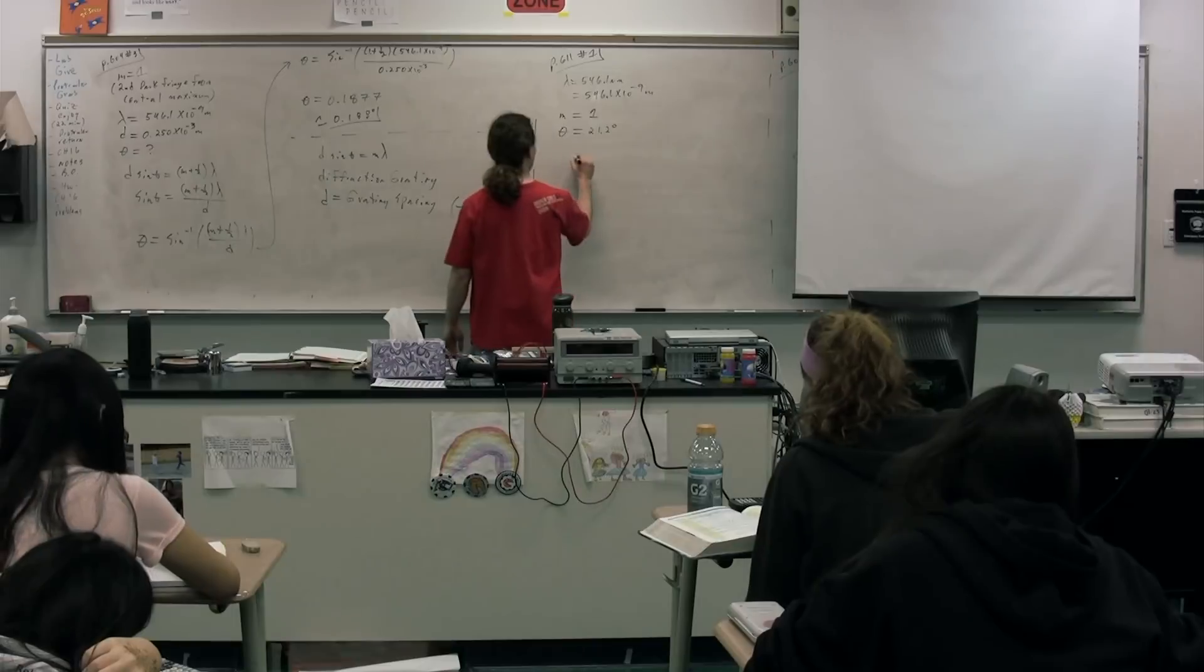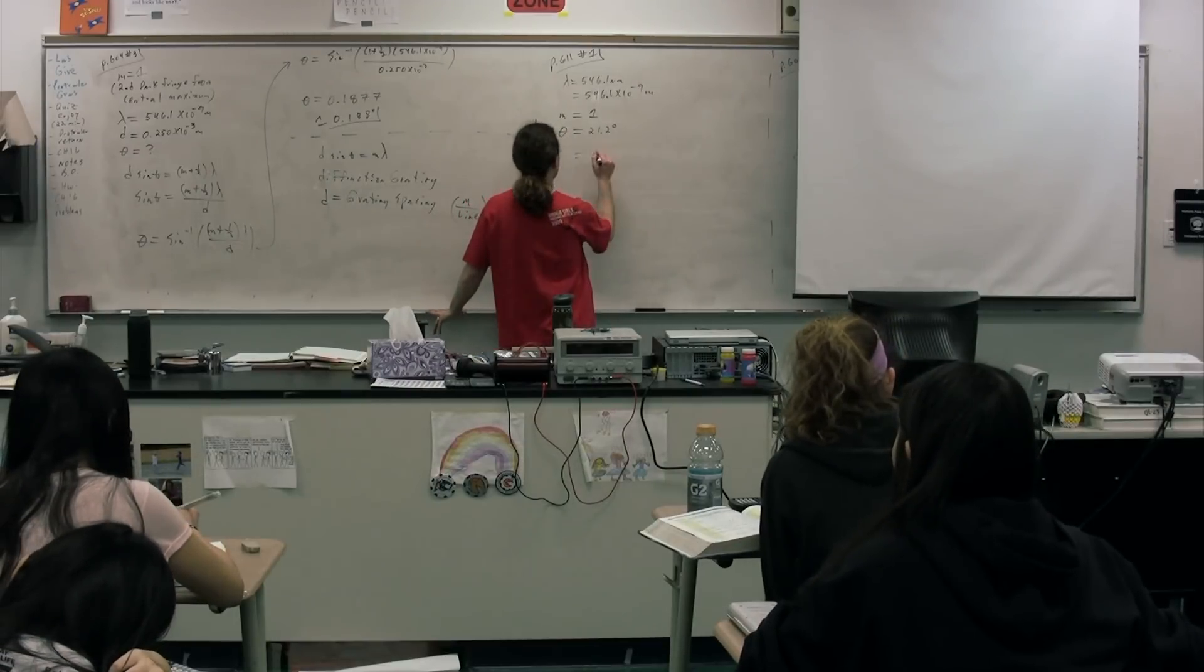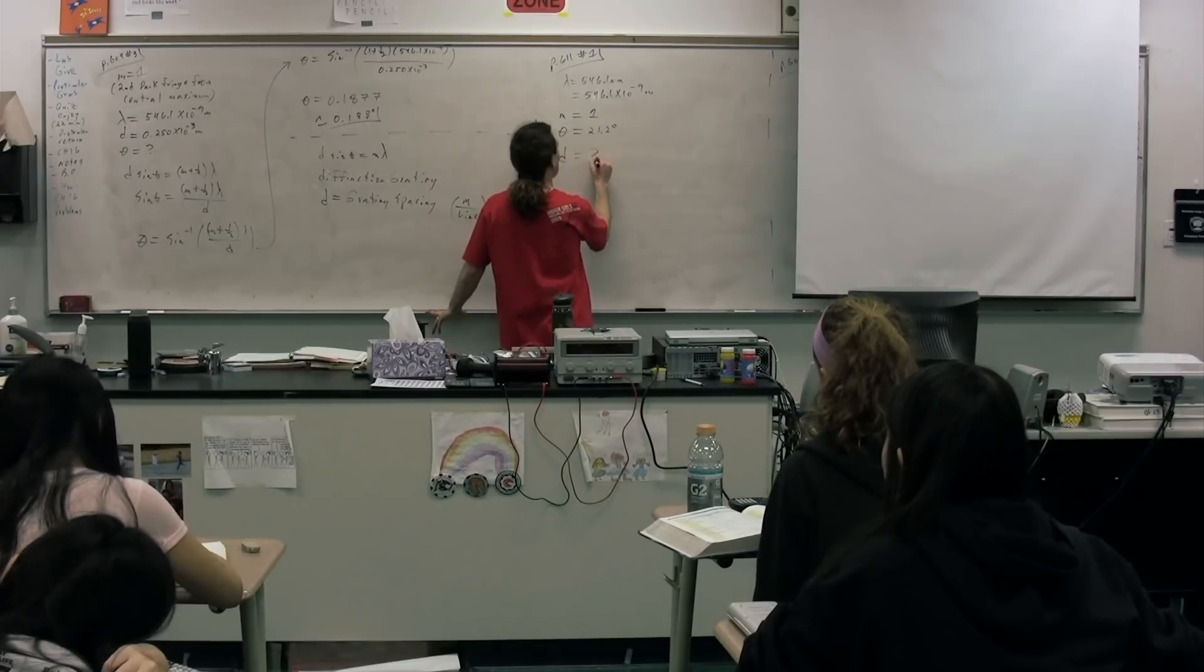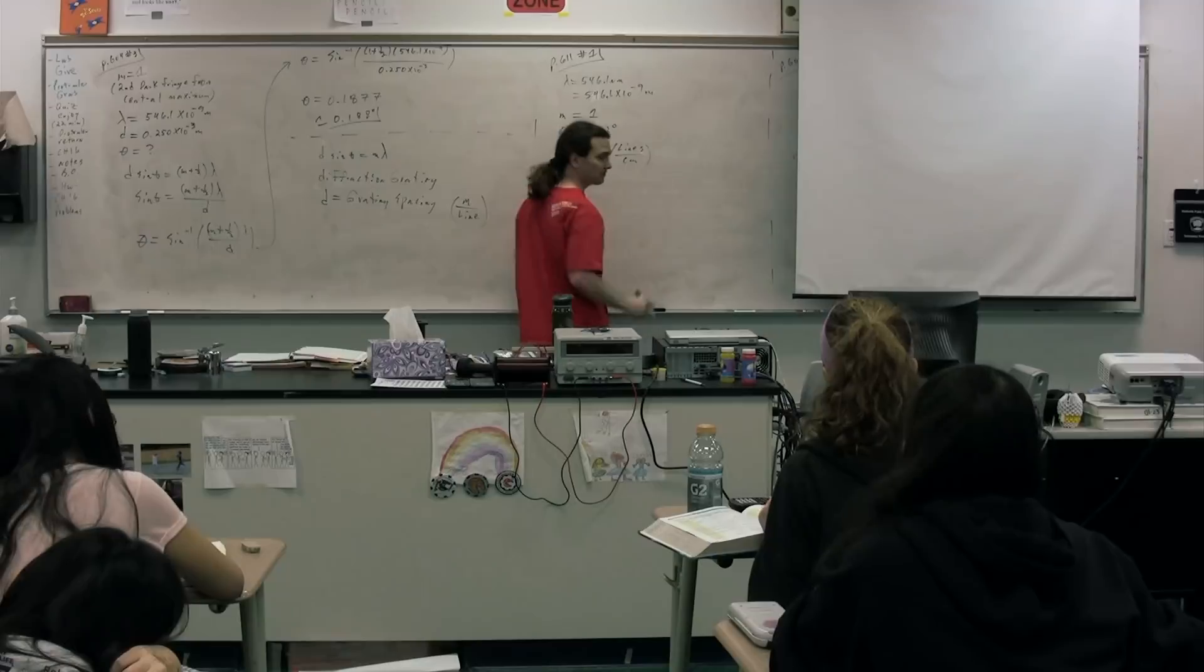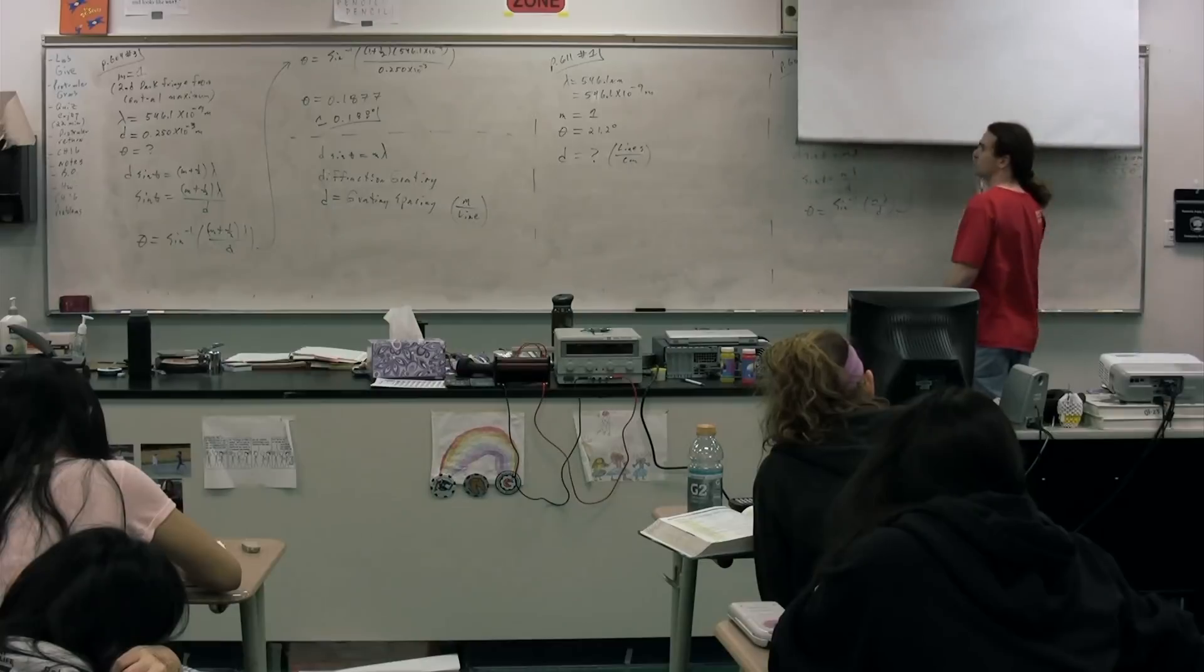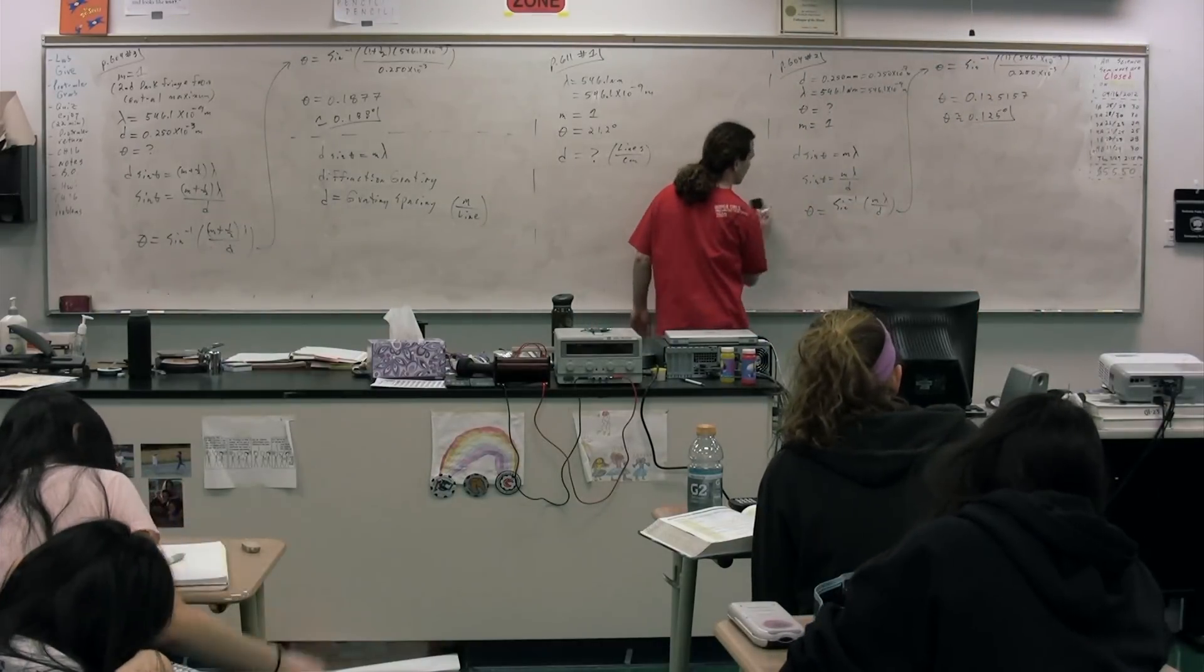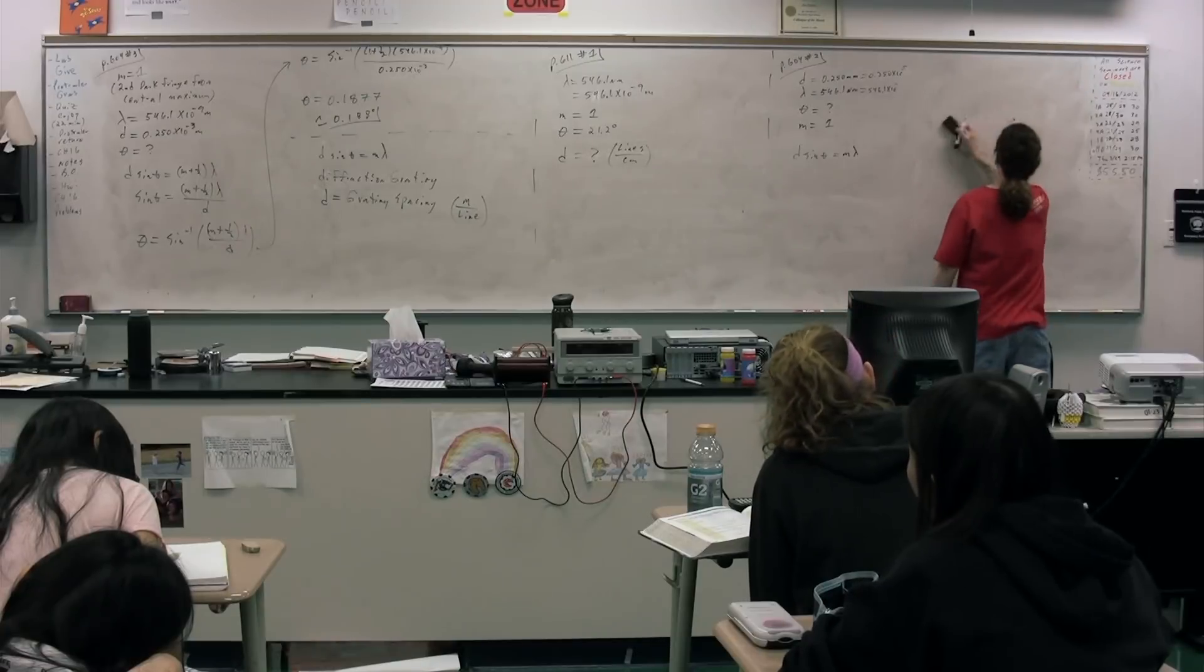Calculate the number of lines per centimeter on this grating. And they want it in specifically lines per centimeter. So clearly, as I stated earlier, we're going to use D sine theta equals M times lambda. So let's work through this.